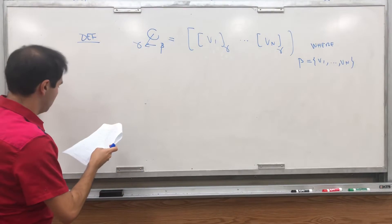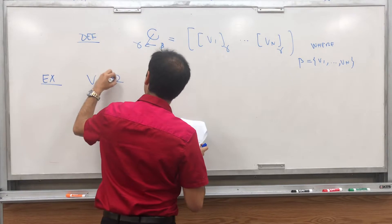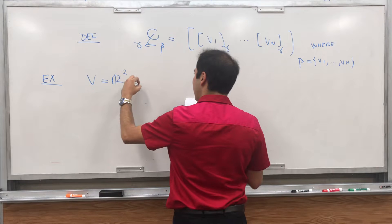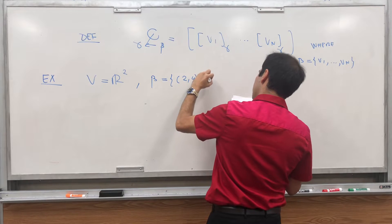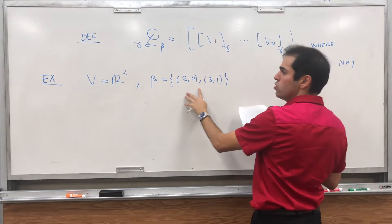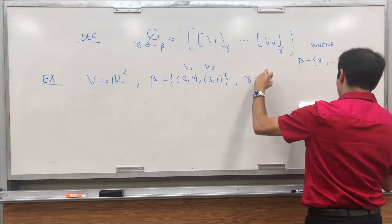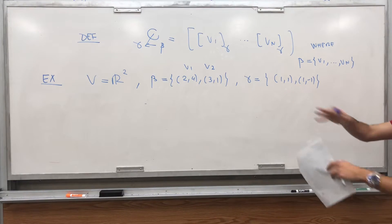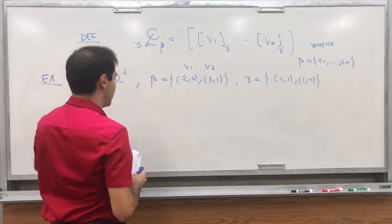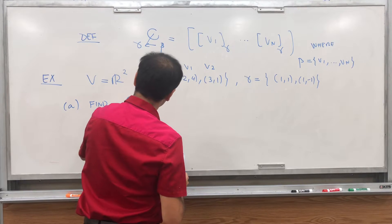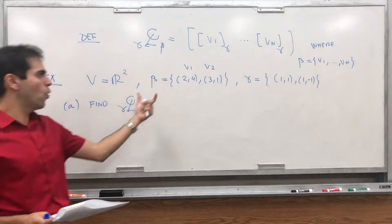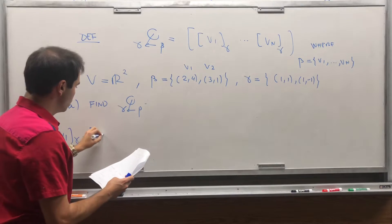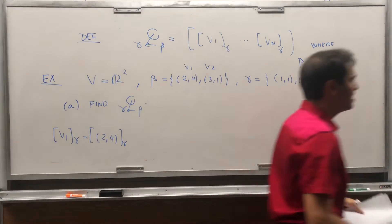Now let me give an example. Suppose we're in R2 — and this works for any abstract vector space with finite dimension. Take the old basis beta: vectors (2, 4) and (3, 1). And suppose you change to the new basis gamma: (1, 1) and (1, -1), which is nicer because the vectors are perpendicular whereas the other pair isn't. The first question is: find the change of coordinates matrix Q from beta to gamma.